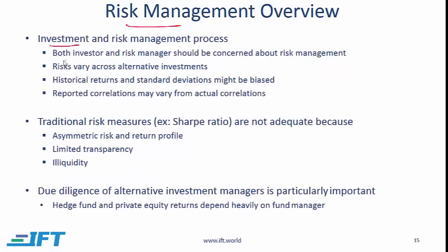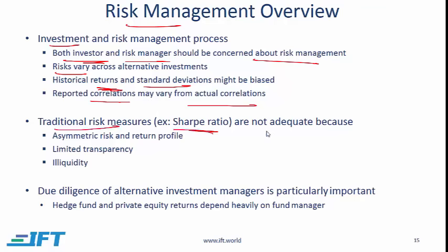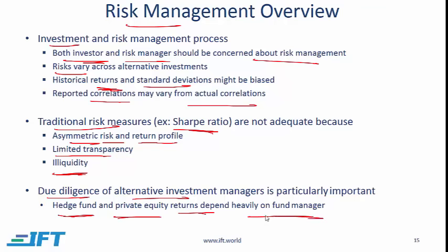Finally, risk management. Both investors and risk managers should be concerned about risk management and should recognize that risks vary across different alternative investments. When looking at historical data, returns and standard deviations might be biased, and reported correlations might vary from actual correlations. Traditional risk measures such as the Sharpe ratio may not be adequate when evaluating alternative investments, because with alternative investments we often have asymmetric risk and return profiles, limited transparency, and most alternative investments tend to be illiquid. It is extremely important to perform due diligence of alternative investment managers — particularly in the case of hedge funds and private equity, where returns depend very heavily on the abilities of the fund manager.